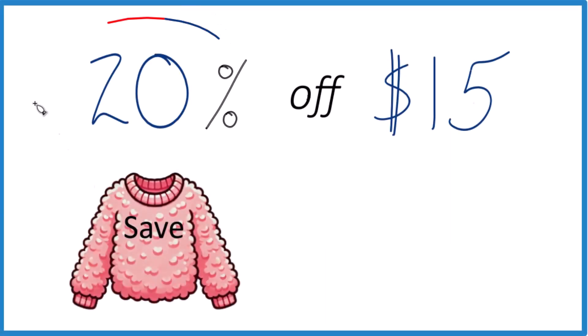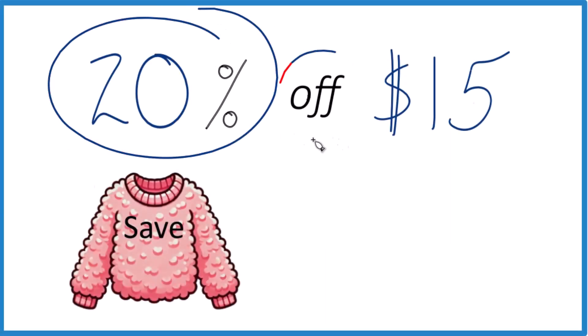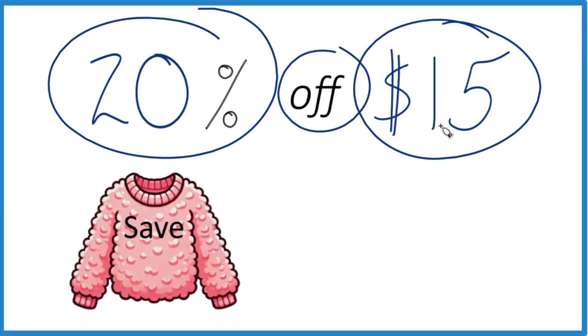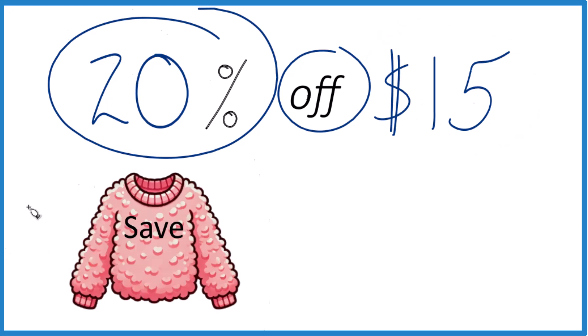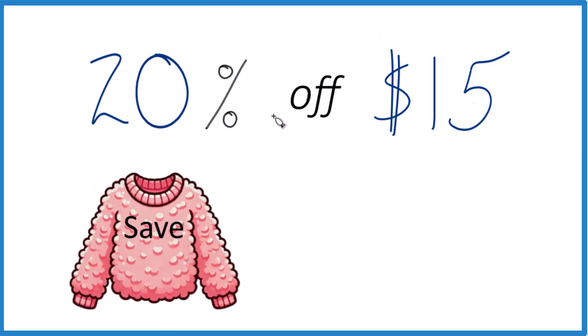So how do you take 20% off of $15? Say you're buying a nice fuzzy pink sweater here. The short answer is 20% off $15 is $3, so you would save $3.